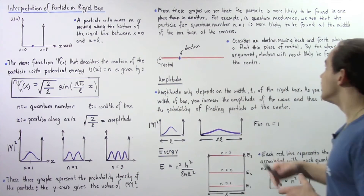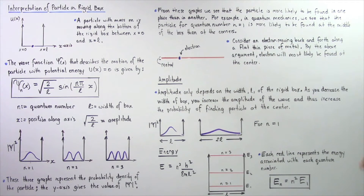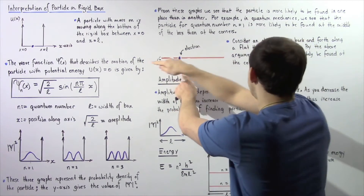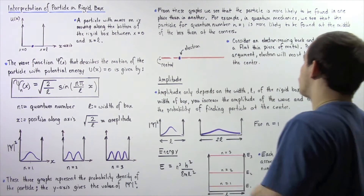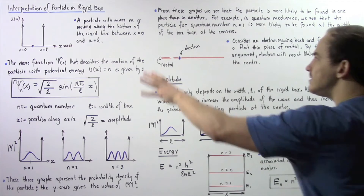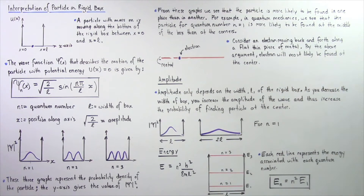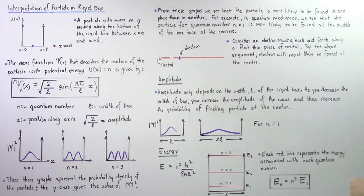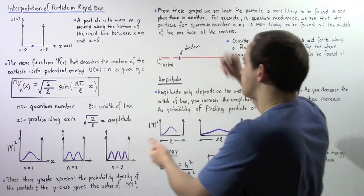As a real-world application, consider an electron moving back and forth along a flat, thin piece of metal — analogous to the one-dimensional rigid box. Based on the argument above, the electron will most likely be found at the center of the metal at any given moment in time.